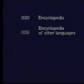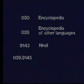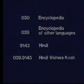The number for encyclopedia given in the schedule is 030, and the number for encyclopedia of other languages is 039. Here the classifier is instructed to use Table 6. When you use Table 6, you will find the number given for Hindi is 9143. When we add this number with the main number, it becomes 039.9143. That is the number for Hindi Vishwakos.